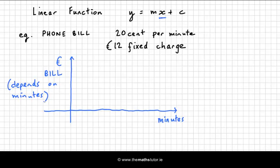It's usual to put the x-axis as the independent variable. We can plot some of these points on the graph.